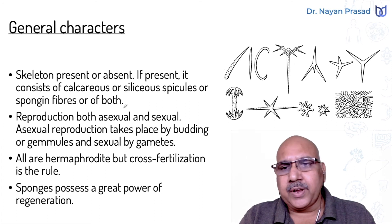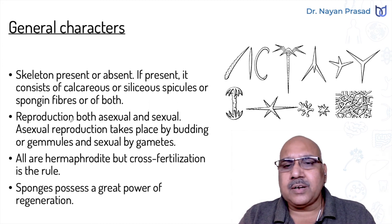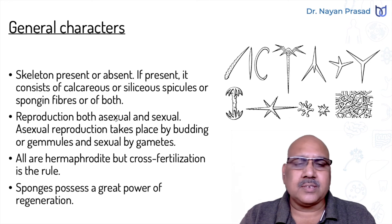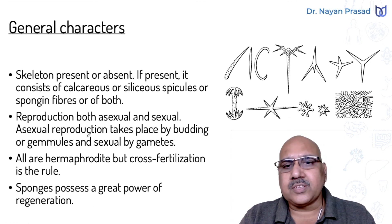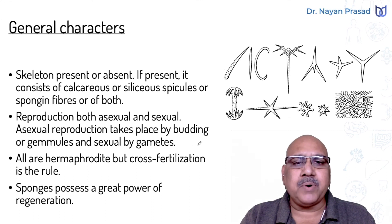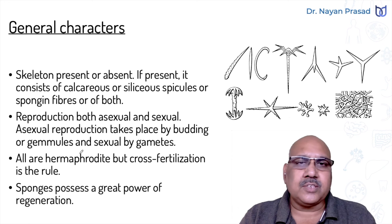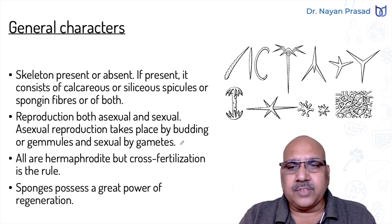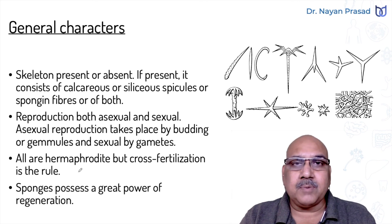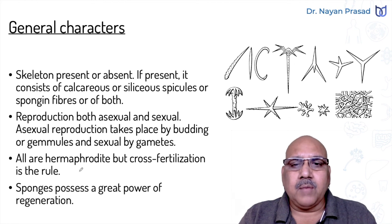In the porifera group, reproduction takes place by both methods — asexual and sexual. Asexual reproduction takes place by budding or gemmules, while sexual reproduction takes place by gametes. All the members are hermaphrodite — meaning bisexual — but cross-fertilization is the rule.